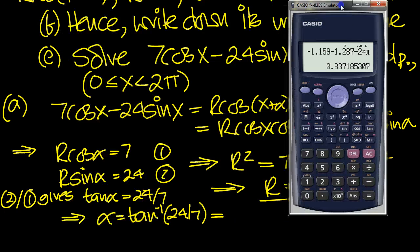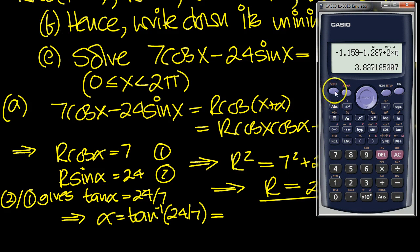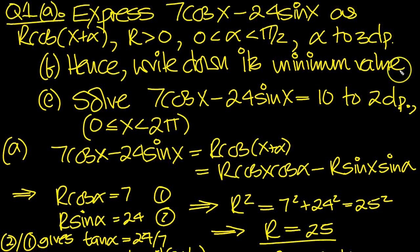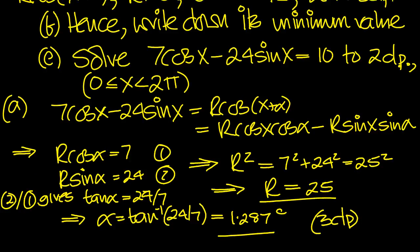So let's have a look at that. Shift tan, 24 divided by 7, and we're in radians mode, 1.287 to 3 decimal places, 1.287 radians. Let's just check we've answered the question. We've found r and we've found α, which is an acute angle, and α is to 3dp, so that's fine.